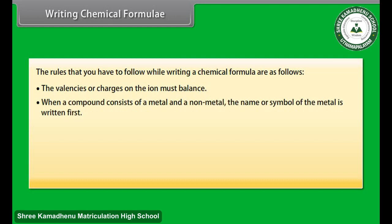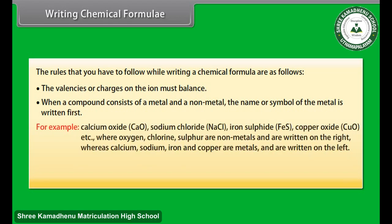When a compound consists of a metal and a non-metal, the name or symbol of the metal is written first. For example: calcium oxide (CaO), sodium chloride (NaCl), iron sulfide (FeS), copper oxide (CuO), etc. Oxygen, chlorine, and sulfur are non-metals and are written on the right, whereas calcium, sodium, iron, and copper are metals and are written on the left.